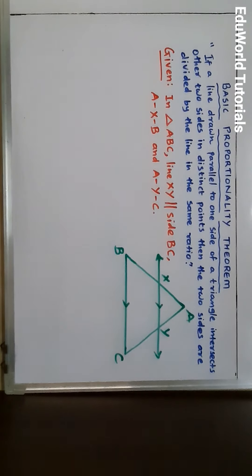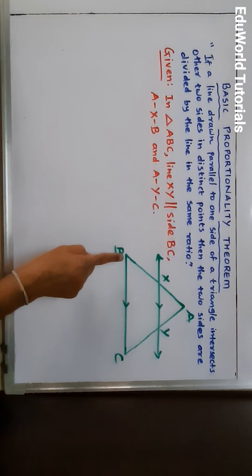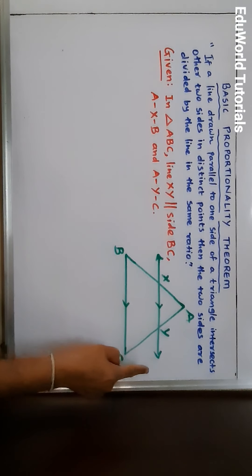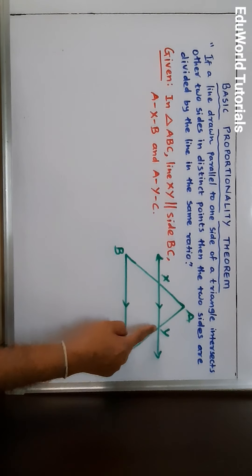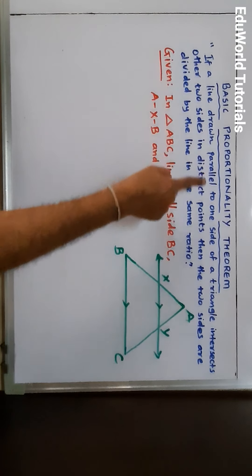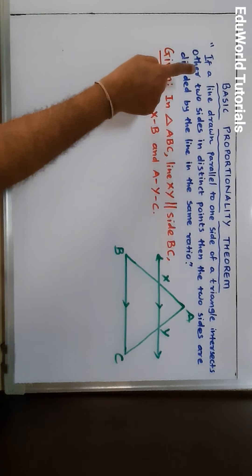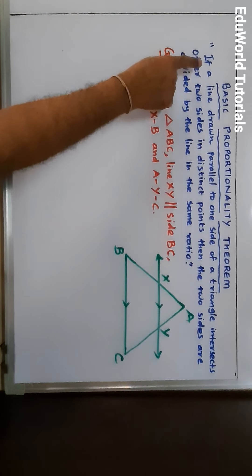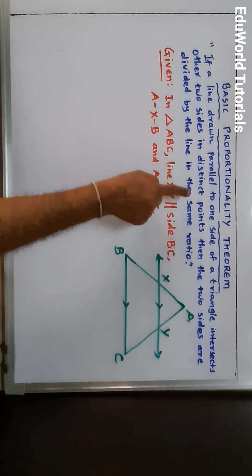As per the statement you are seeing, I have drawn triangle ABC and a line XY which is parallel to side BC of triangle ABC. This line XY intersects side AB at point X and side AC at point Y. So I have drawn the figure as per the statement. In this if-then type conditional statement, the part that follows 'if' — a line drawn parallel to one side of a triangle intersects the other two sides in distinct points — is called the antecedent.